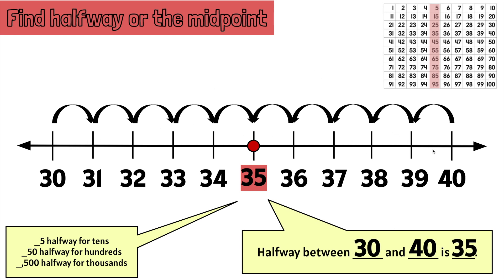We can also add 30 plus 40 and divide that by 2. 30 plus 40 is 70. Let's cut that in half. 70 divided by 2. 70 divided by 2 is 35.